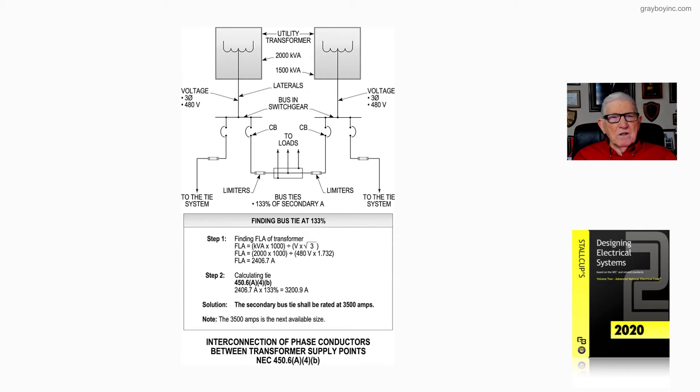The secondary conductors are routed to a bus and switchgear with overcurrent protection devices for the TIE system, and the bus TIE that you see there. Two CBs. And those two CBs in the 1500 kVA is arranged in the same manner. But notice it's a little different here.